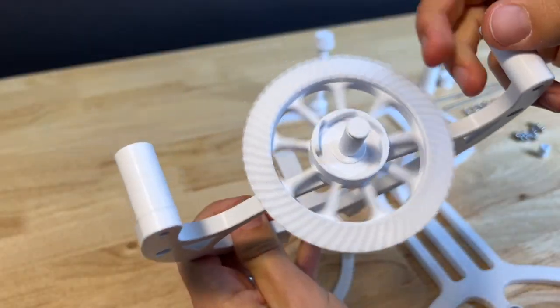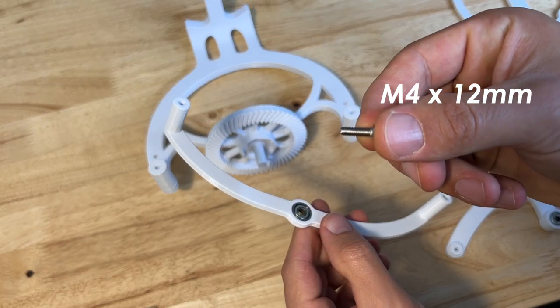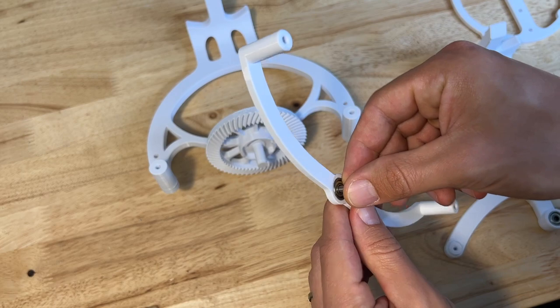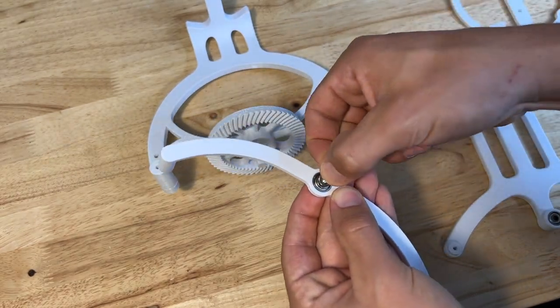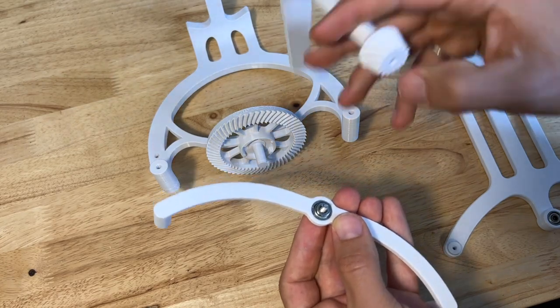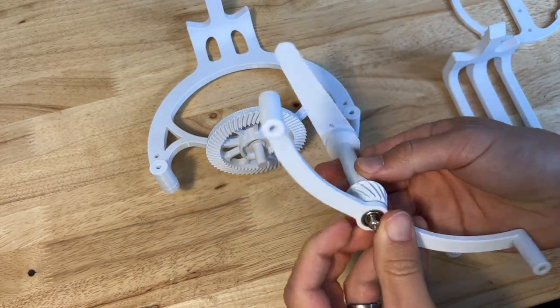Make sure that the gear spins freely. Then slide an M4 by 12 millimeter screw into this bearing in this direction. Throw two washers on the end of that. And then your swing arm will screw into that screw.